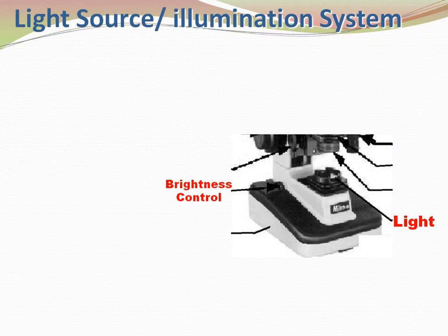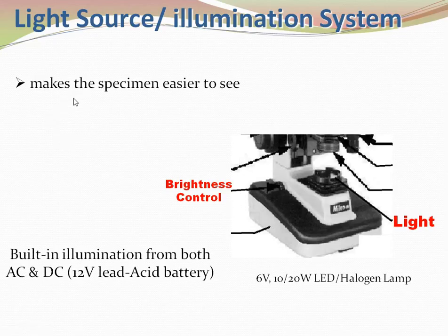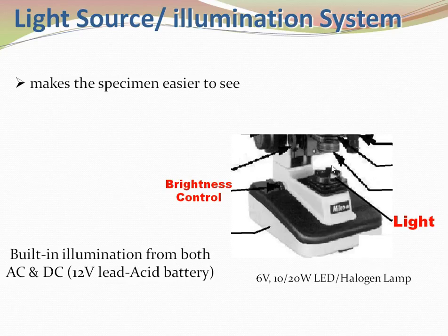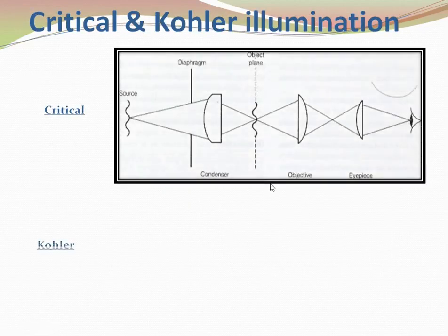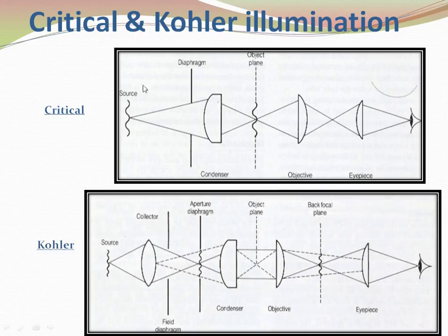Now the light source: LED white light is used with brightness control to increase or decrease brightness. The function of light is to make the specimen easier to see. Built-in illumination works from both AC and DC using an LED halogen lamp. It is mounted below the microscope on the base. There are two types of illumination: critical illumination and Köhler illumination.